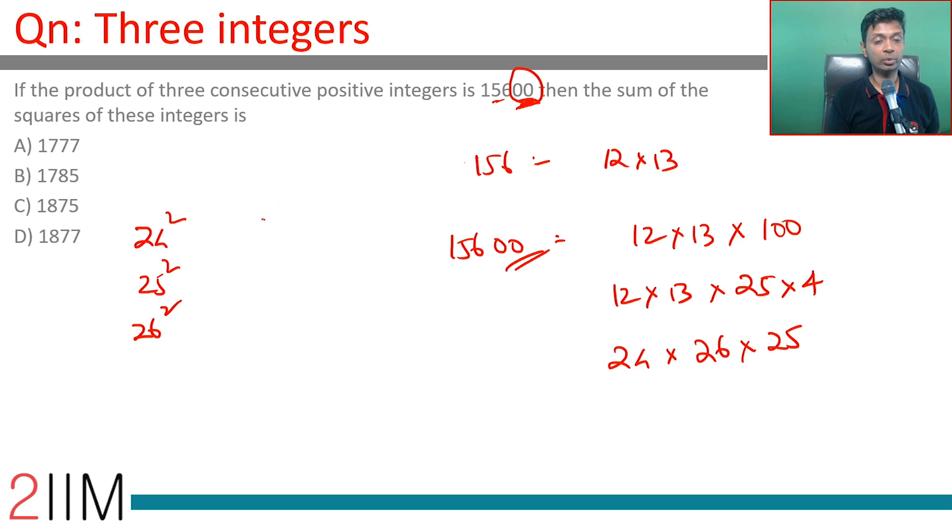The sum of the squares of these integers: 24 squared plus 25 squared plus 26 squared. 576, 625, 676. 6 plus 6 is 12, 12 plus 5 is 17. 17, 8 plus 2 is 10, plus 7 is 17. 7, 1, 6, 6, 6, 18, 1877.